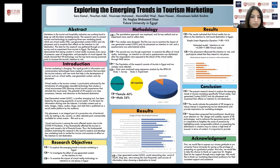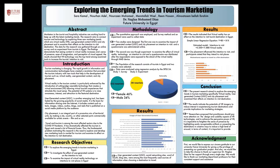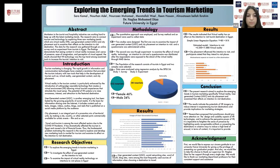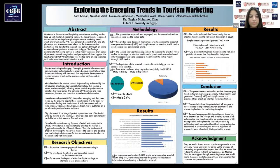Our second tool, user-generated content, is being fueled by the growing popularity of social media for information sharing over the internet, such as videos on social media platforms. Our last tool is city placement, which is an integral part of the promotion mix of territorial units by making a city, country, or other selected products commercially available for interested events like films.